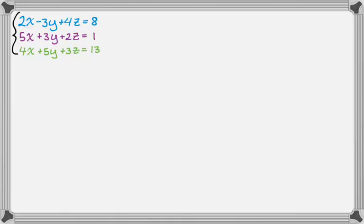So here's our system: 2x minus 3y plus 4z equals 8; 5x plus 3y plus 2z equals 1; and 4x plus 5y plus 3z equals 13. I find it convenient to number the equations, so I'm going to call them 1, 2, and 3. That way I can organize my work and always go back to check what I did. The first thing I'm going to do is pick two of the equations and eliminate one of the variables.